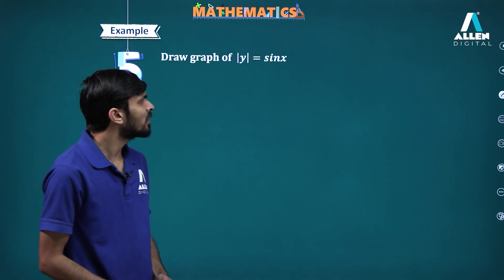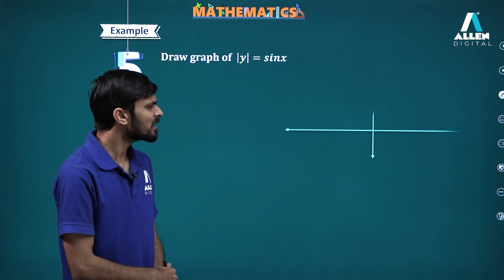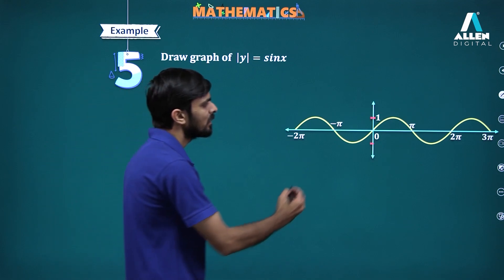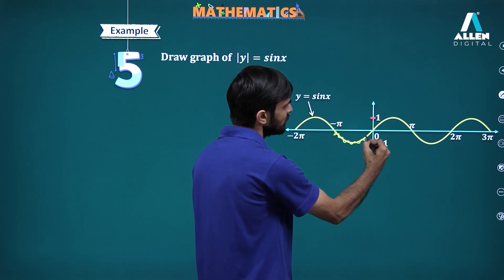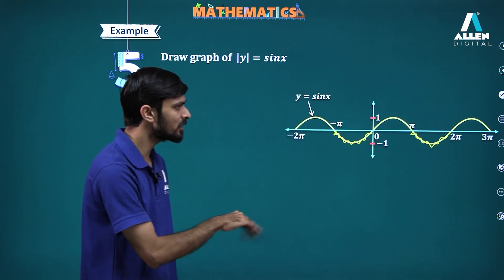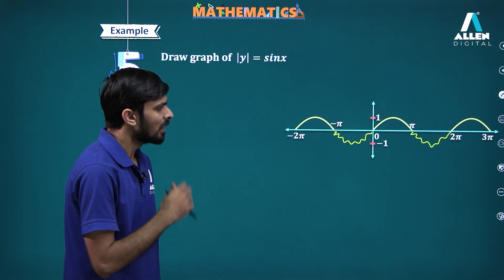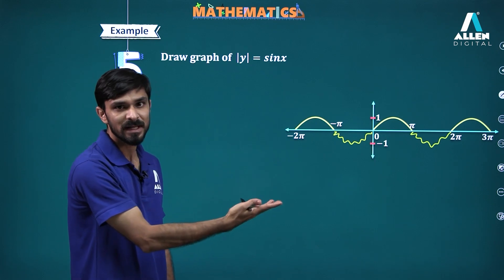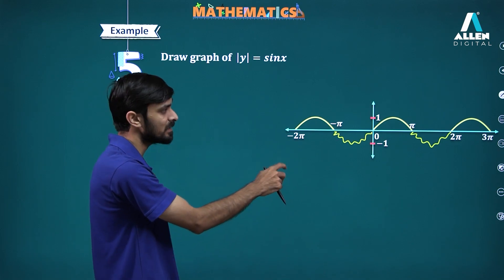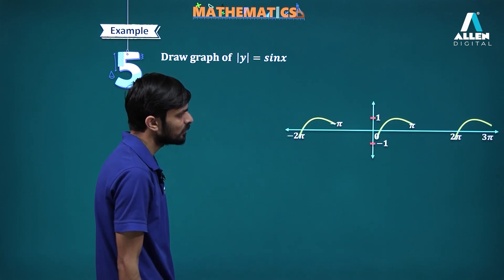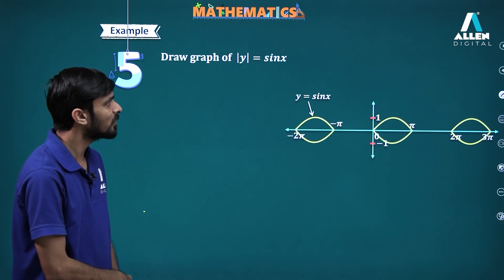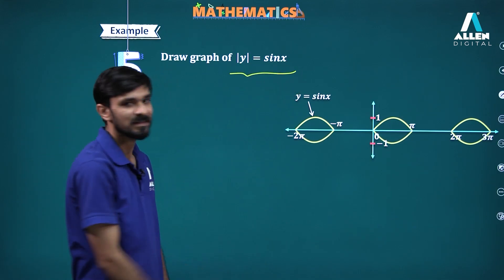Remove the portion of the graph which lies below the x-axis because mod y equal to f(x) and when f(x) is negative it is not permissible. Plot the remaining portion of the graph and its mirror image in the x-axis. For example, to draw the graph of mod y equal to sin x: the part below the x-axis needs to go, and whatever part is above the x-axis must have its reflection in the x-axis as well. This will be the graph of mod y equal to sin x.